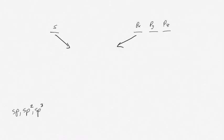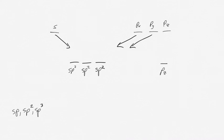sp2 orbitals are made from the s orbital and two of the p orbitals. Just like with the sp orbitals, the sp2 orbitals are in between the s and the p energy levels, and you also have the remaining unhybridized p orbital. The number of orbitals that are mixed equals the number of hybrid orbitals produced. The s and two of the p's are mixed, so you end up with three sp2 orbitals and one remaining unhybridized p orbital.